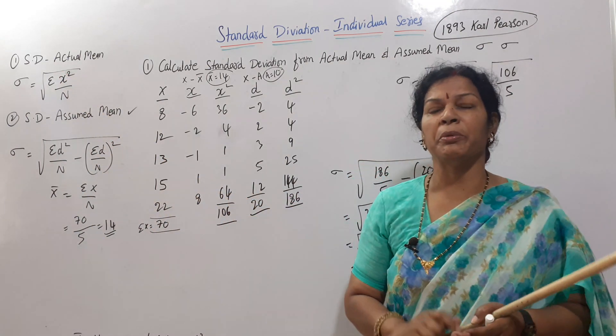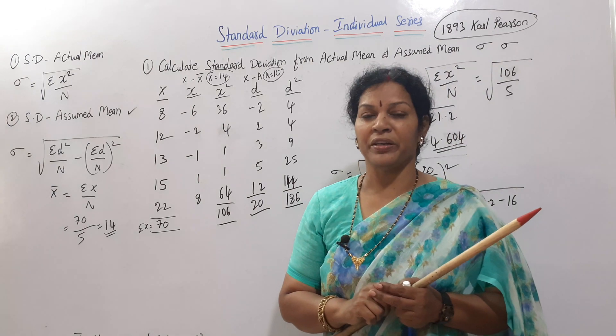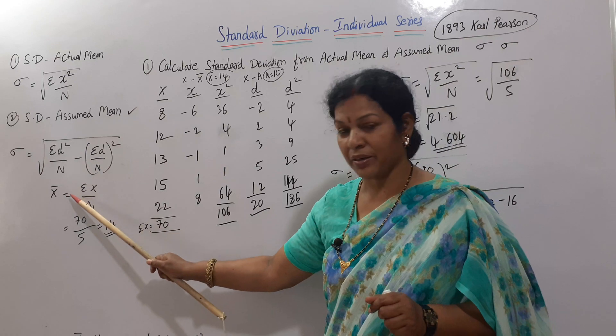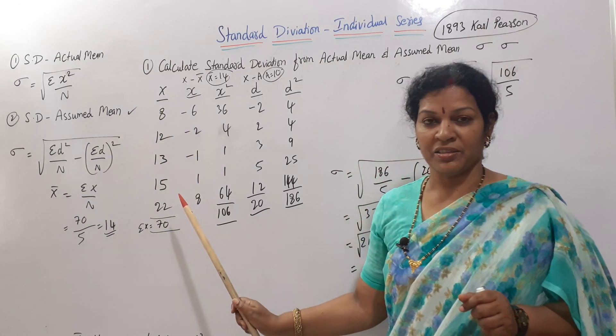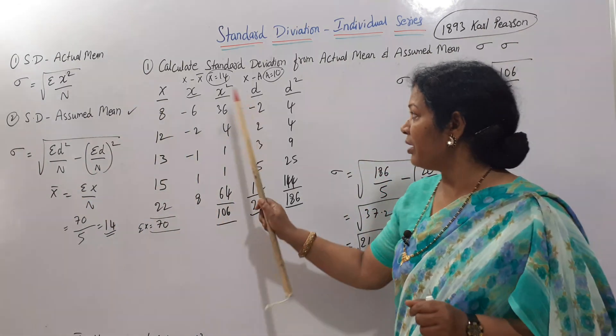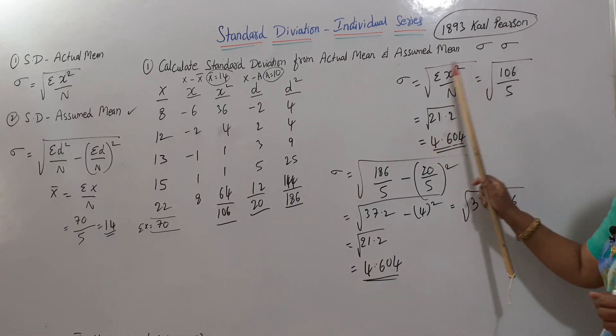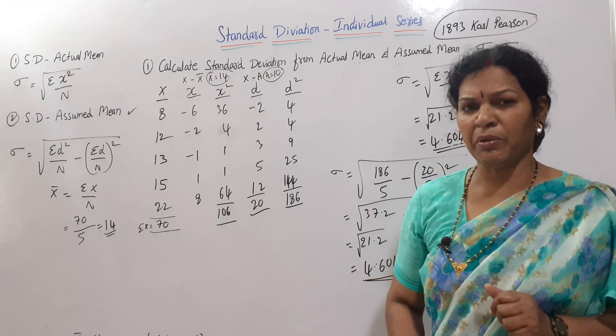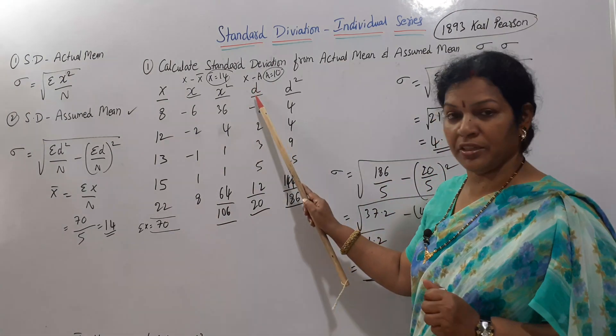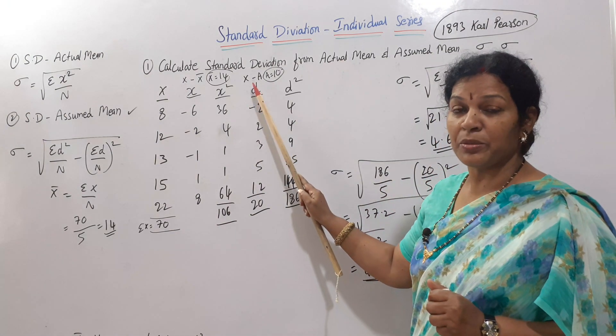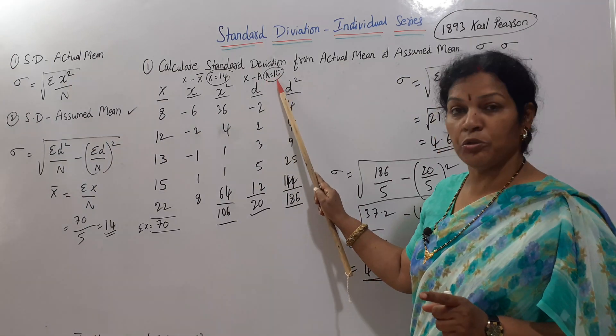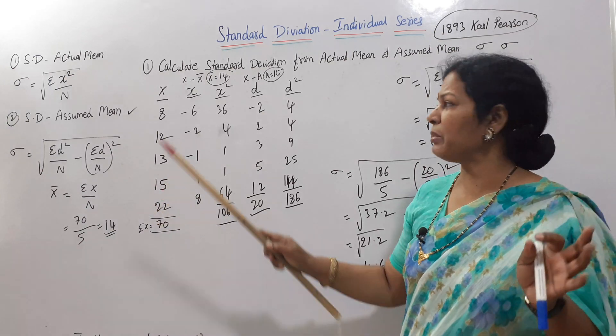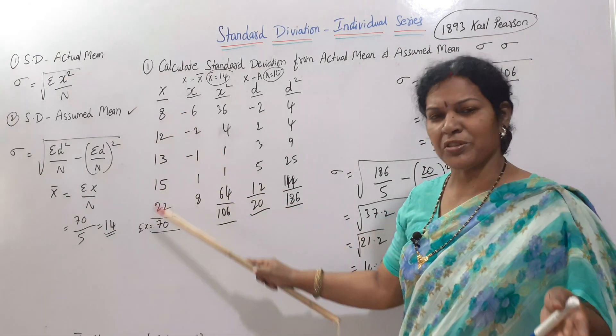If you remember this formula: x means you have to remember what is x. x means x minus x̄. x̄ means first we have to go for x̄, then you get x, then x square. First as per actual mean, next assumed mean. As per the formula, what do we need? d. How do we get d? x minus a, assumed mean. I've taken 10 - you can take any number. Better to take minimum number. If you take 8, all positive values you'll get.